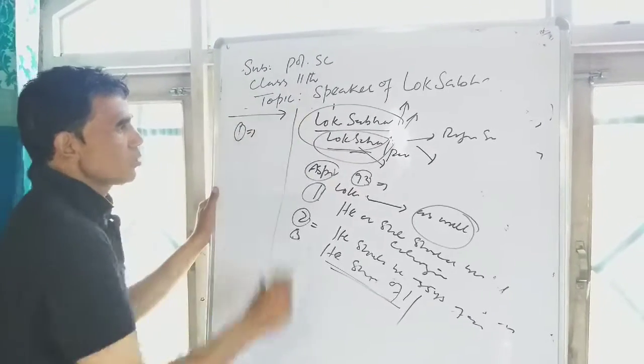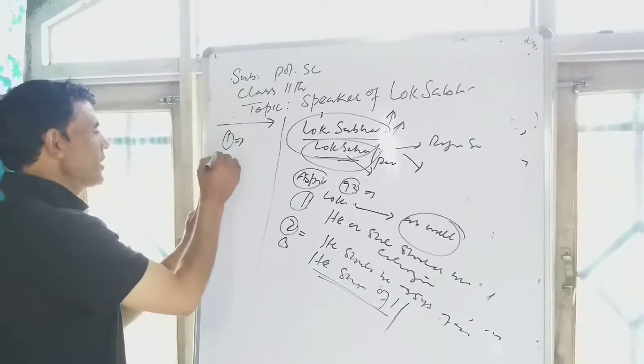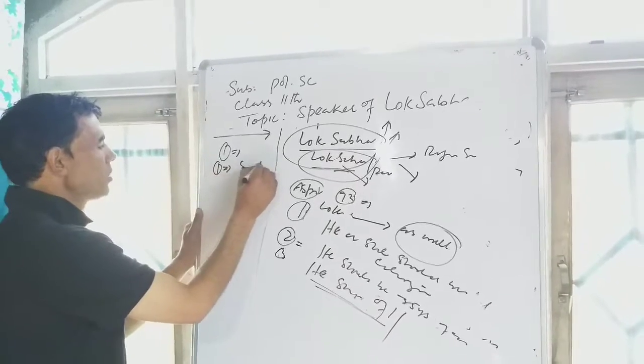Lok Sabha is formed after five years. In its first meeting the Lok Sabha speaker is elected. His elections are ordered by the president of India and elections take place on simple majority of the members.